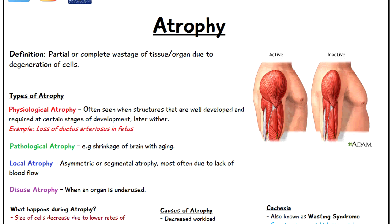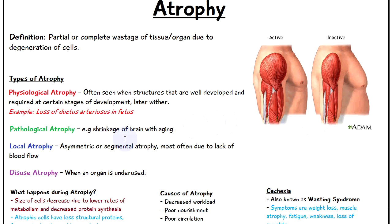There are different types of atrophy: we can have physiological atrophy, pathological, local, and disuse.